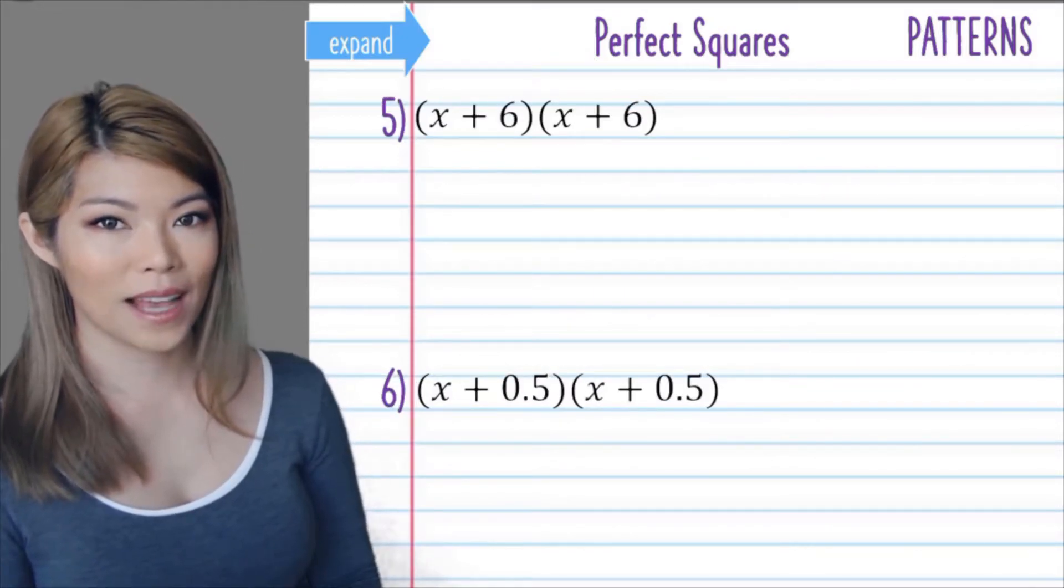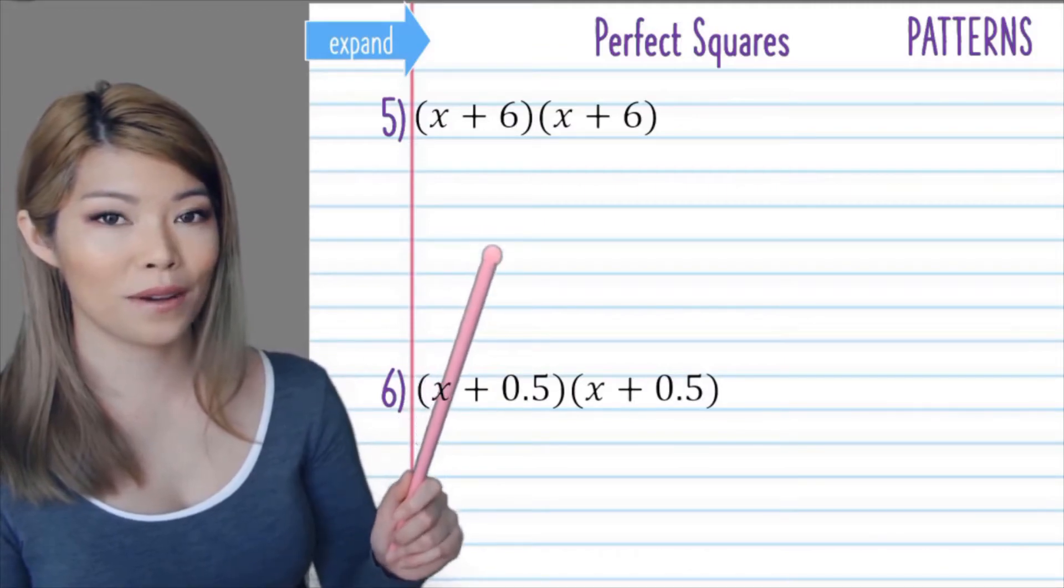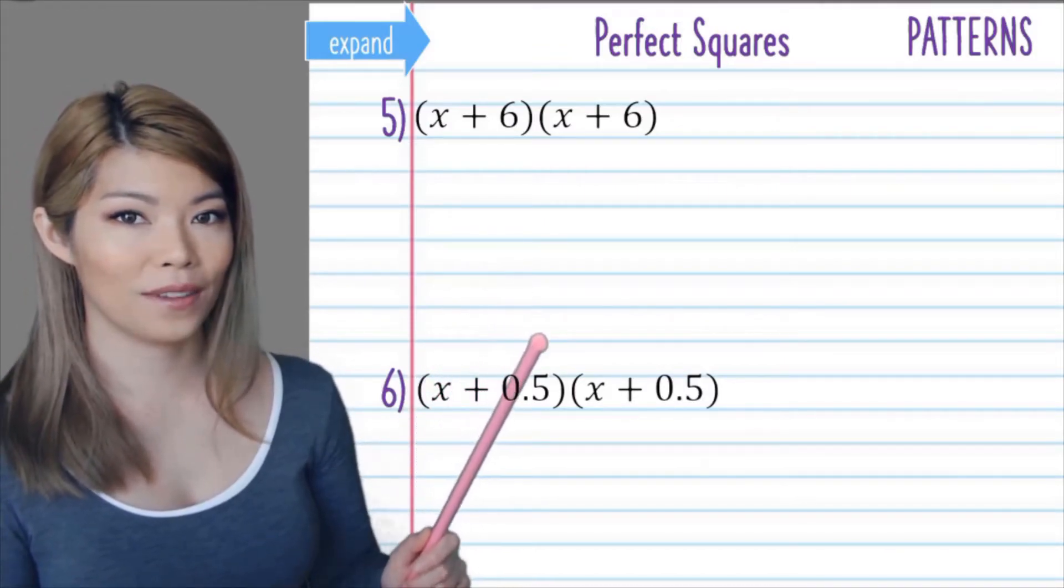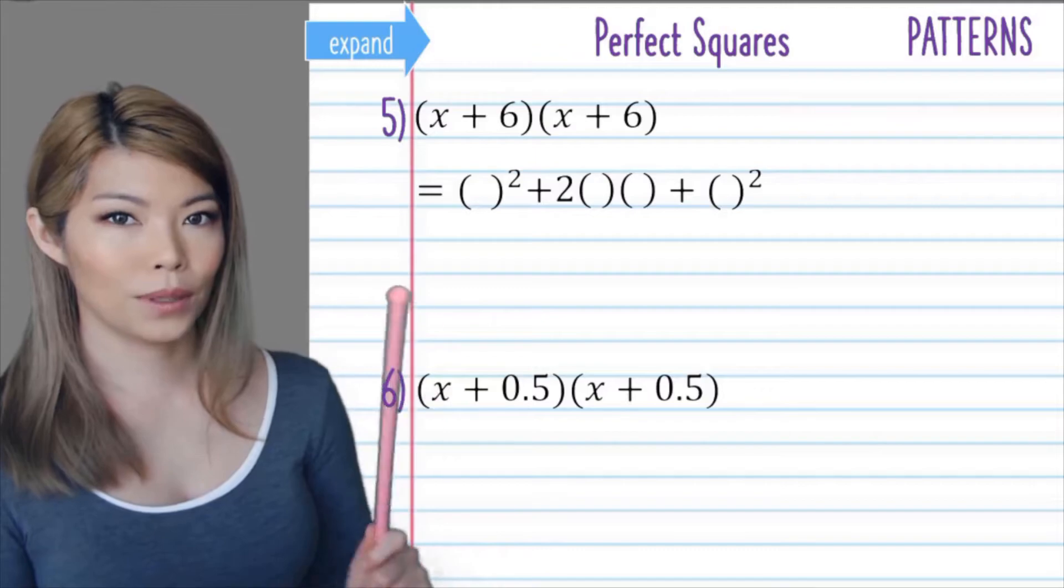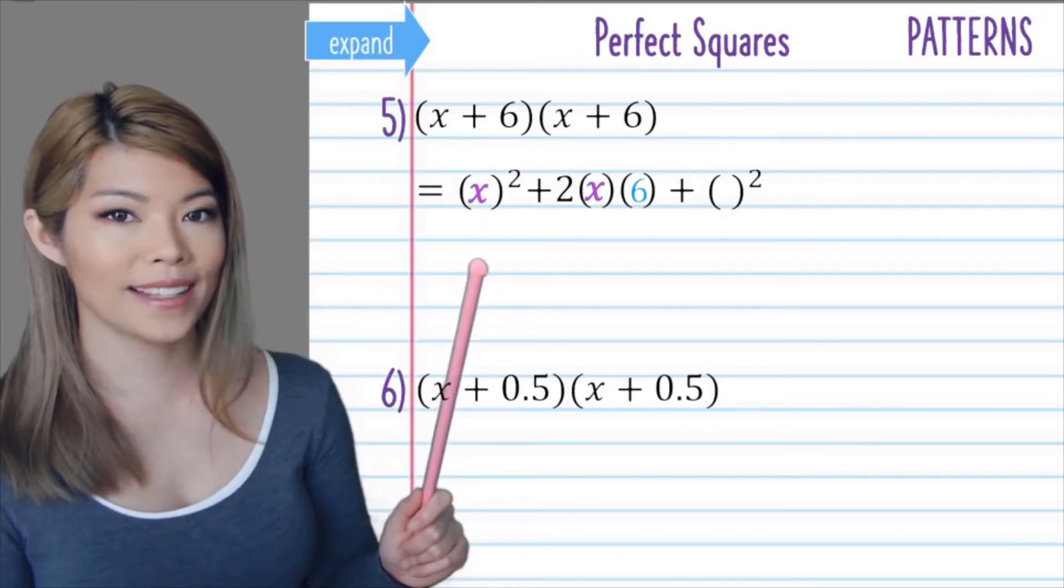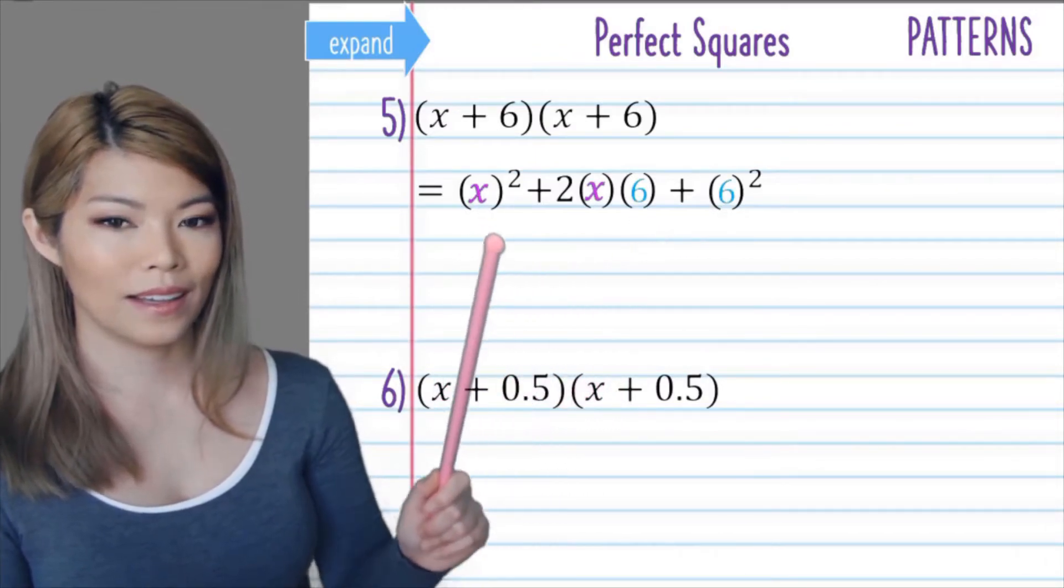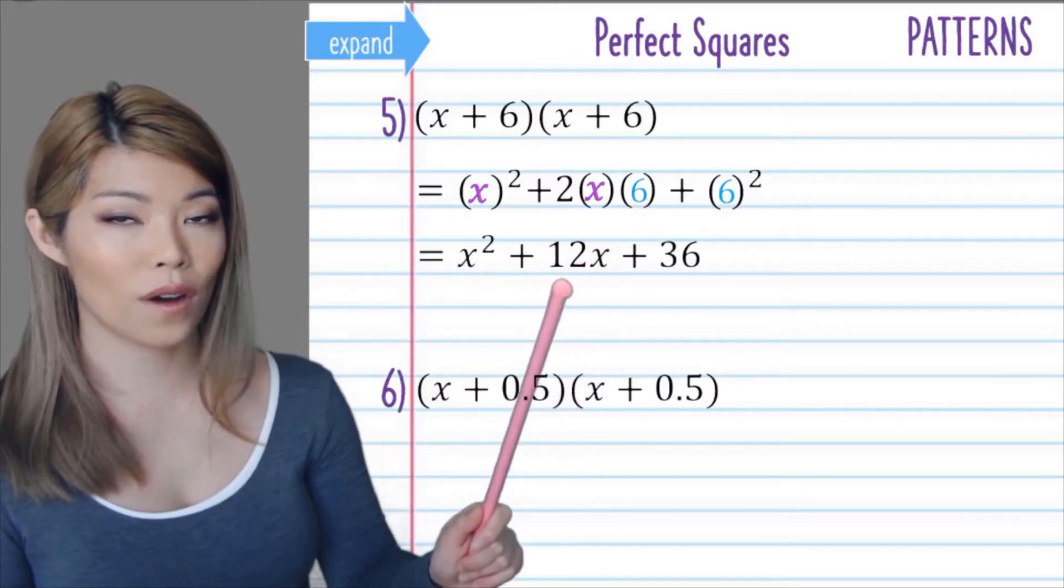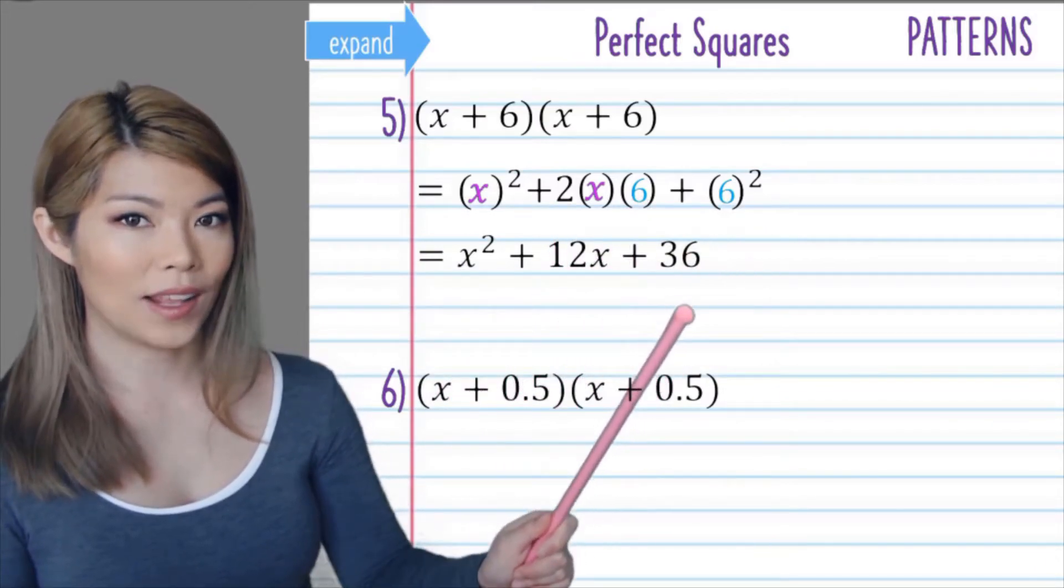Another two examples. Remember, you can always pause the video and try it out yourself first. Put the brackets, x in the first two brackets and 6 in the other two. Now we have x squared plus 2 times 6 is 12x and 6 squared is 36.